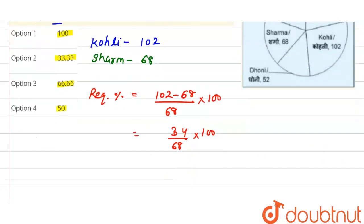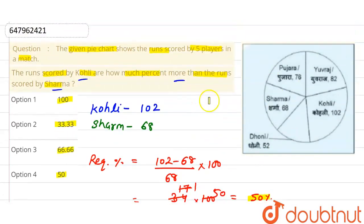Dividing and simplifying step by step: 34 divided by 68 equals 17 divided by 34 after canceling by 2, which gives us 50 upon 100. So we get 50 percent. The answer is 50 percent, which is option 4. Thank you!